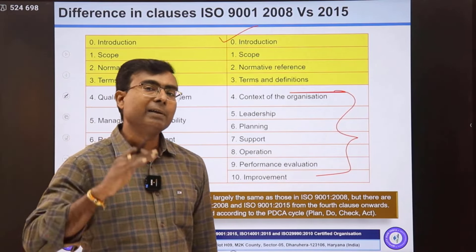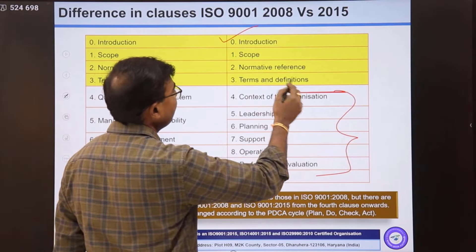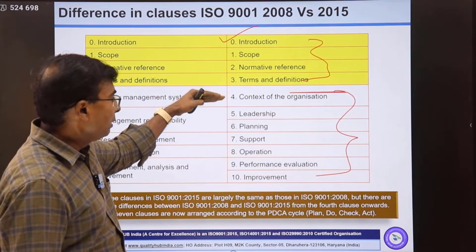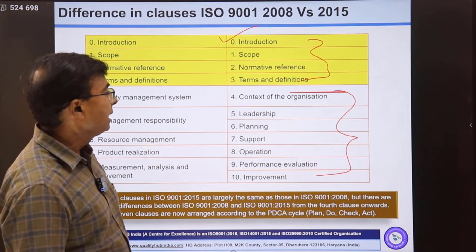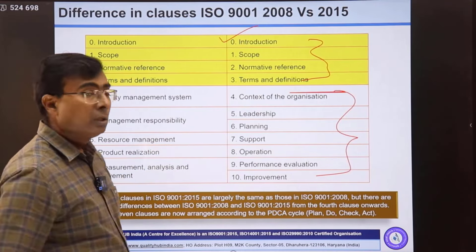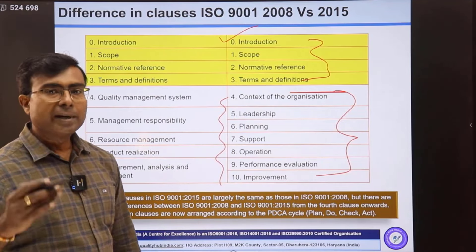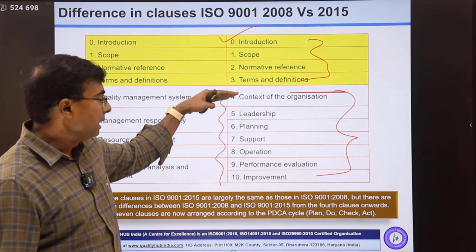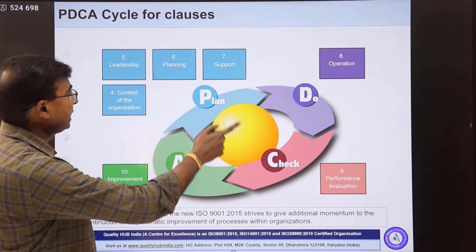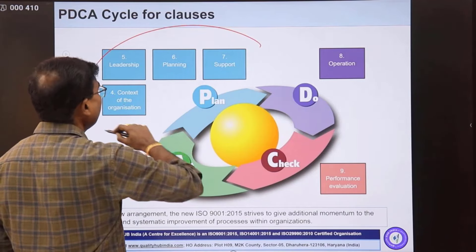The clauses — introduction, scope, normative reference, and terms and definition — are common clauses called non-auditable clauses. The auditable clauses start from clause number four: context of the organization, leadership, planning, support, operation, performance evaluation, and improvement. These seven clauses are the auditable clauses that a third-party auditor will cover for certification. IATF 16949 is also based on the PDCA cycle — Plan, Do, Check, and Act.